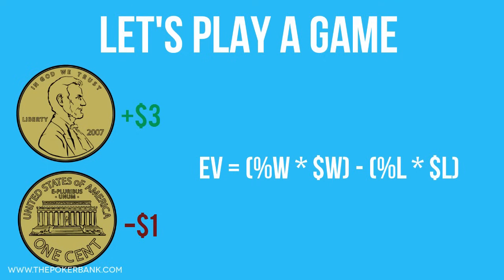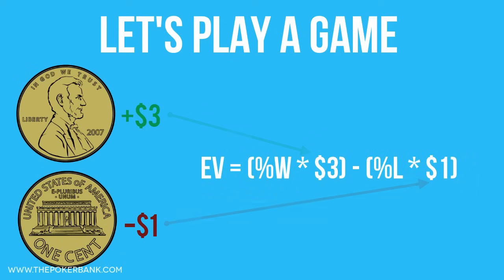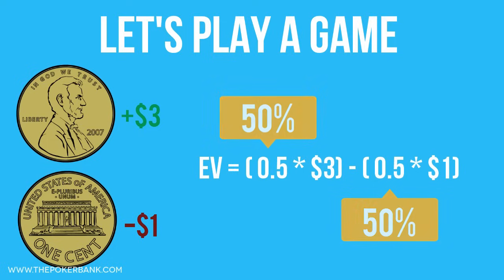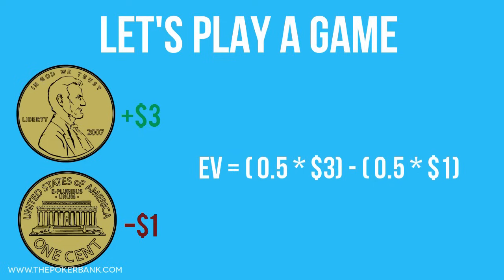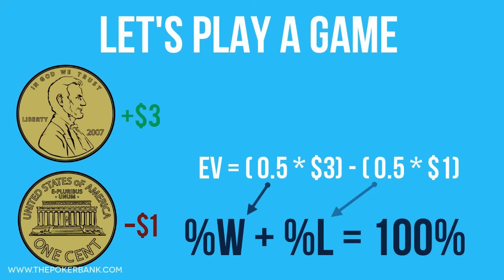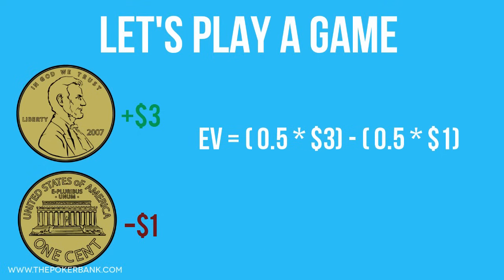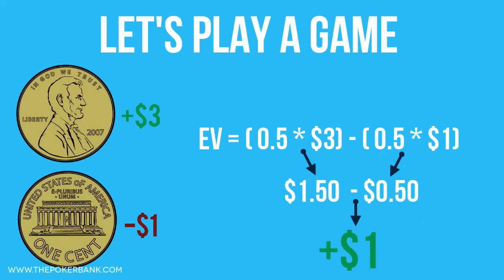We know that when you win you get $3, so Money W equals 3. And we know that when I win you lose $1, so Money L equals 1. Because this is a fair coin there is a 50% chance of heads and a 50% chance of tails, so %W is 50% and %L is 50%. A quick trick: %W plus %L always equals 100%, so if you know one you can figure out the other. Doing the math, $1.50 minus $0.50 equals plus $1 — meaning in the long run you are expected to win $1 each time we flip the coin.